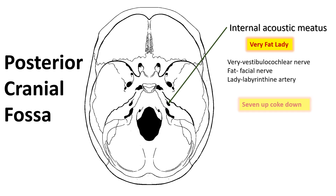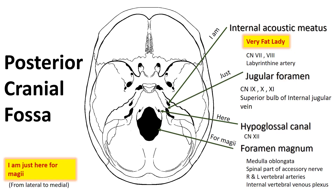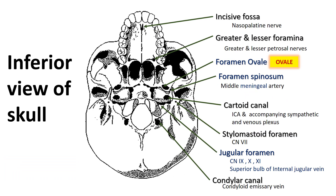Some use the mnemonic '7 up, 8 down' — 7 means the 7th cranial nerve (facial nerve), which is superior in the internal acoustic meatus. The 7th and 8th cranial nerves pass through the internal acoustic meatus, while 9th, 10th, and 11th go through the jugular foramen, and the 12th cranial nerve goes through the hypoglossal canal. Remember them in order.